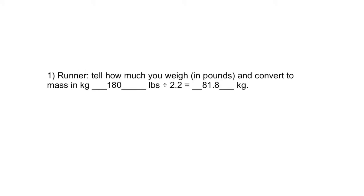Calculation step one: Runner, tell how much you weigh in pounds and convert to mass in kilograms. For example, 180 pounds divided by 2.2 equals 81.8 kilograms.